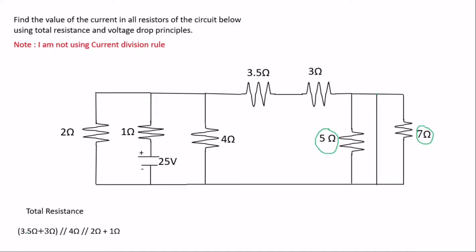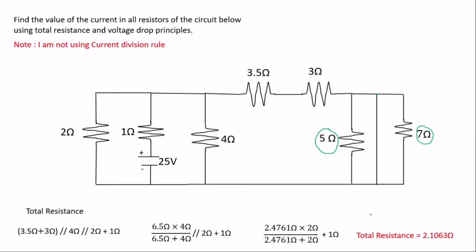So 3.5 ohms plus 3 ohms will be in parallel with 4 ohms, which will also be in parallel with 2 ohms, plus 1 ohm in series. Solving this: 6.5 in parallel with 4 ohms gives (6.5 × 4) / (6.5 + 4), still in parallel with 2 ohms and in series with 1 ohm. Working through the calculation gives 2.4761 ohms in parallel with 2 ohms plus 1 ohm. The total resistance is 2.1063 ohms, because the 5-ohm and 7-ohm resistors have been short-circuited.